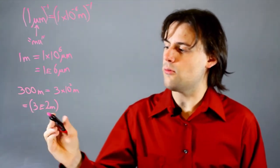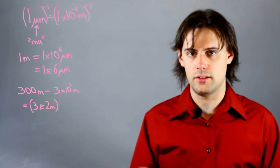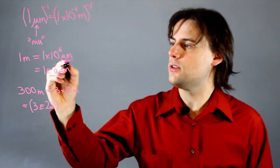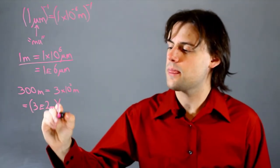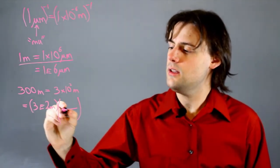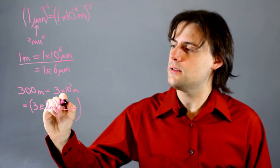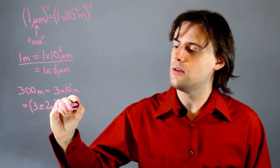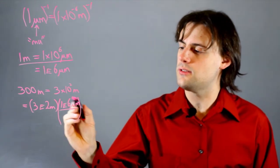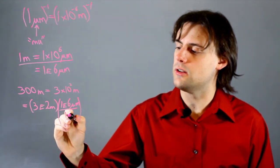And let's say I want to convert this distance into micrometers. I would simply use this conversion factor right here. And I would multiply by 1 times 10 to the sixth micrometers, because that's how many micrometers there are in one meter.